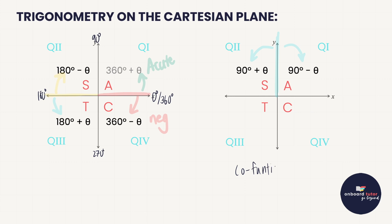Those 90° plus or minus cases are called co-functions, and the two co-functions we need to know are sine and cos — they are co-functions of each other. When reducing, identify which quadrant you're in, determine whether your ratio is positive or negative, and for co-functions also switch between sine and cos. For example, sine of 90° plus something is in quadrant two where sine is positive, so it becomes positive cos.